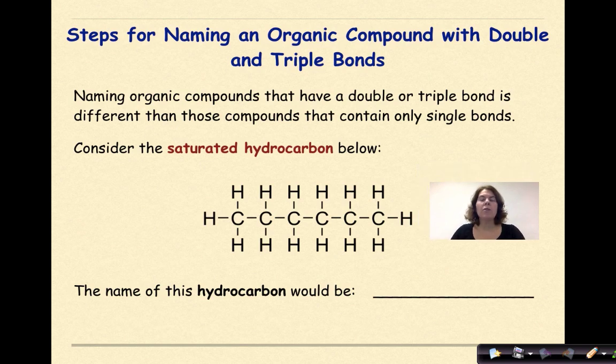Steps for naming organic compounds with double and triple bonds. Naming organic compounds that have a double or triple bond is different than those compounds that contain only single bonds. Consider the saturated hydrocarbon below. We know that it's saturated because if we look at all the individual bonds in between, like right here and here and here, we can see that they're all single bonds. That's why we classify it as saturated.